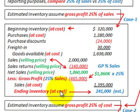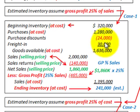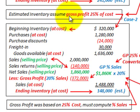Subtracting sales at cost of $1,395,000 from goods available at cost of $1,636,000, we get our estimated ending inventory at cost of $241,000. Remember, this is just an estimated amount based on gross profit at 25% of sales.